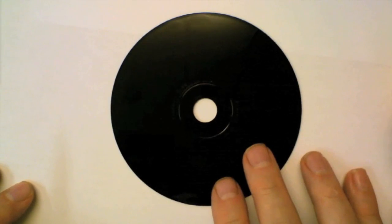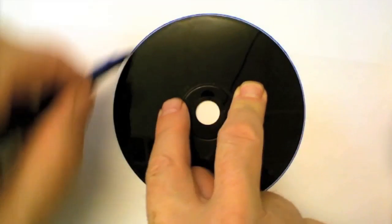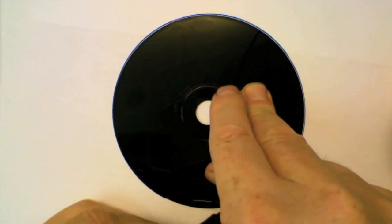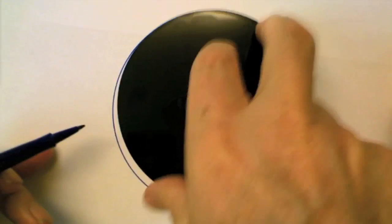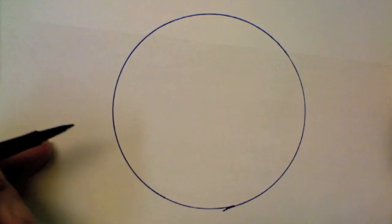Take anything that's round, like this disc here. Hold it down and draw your circle around it. This is how to create a number circle in a really easy, fun way. Kids love a nice even circle like that.